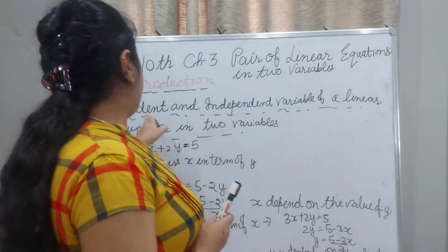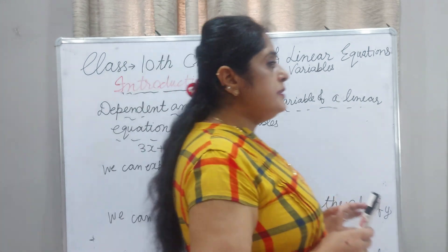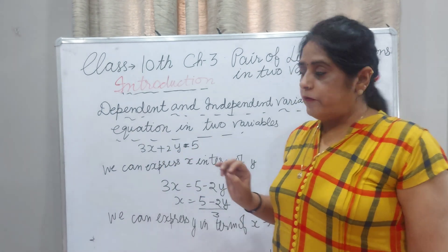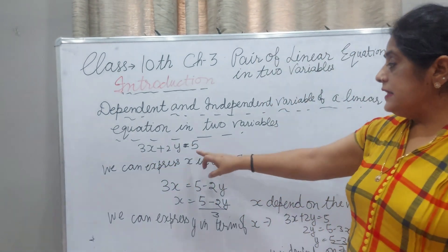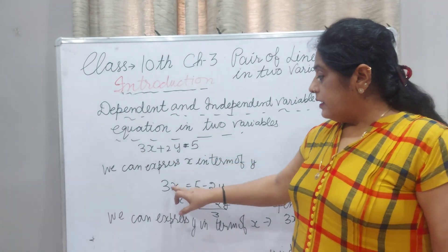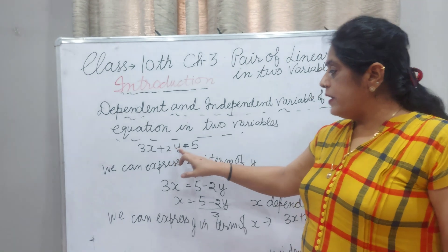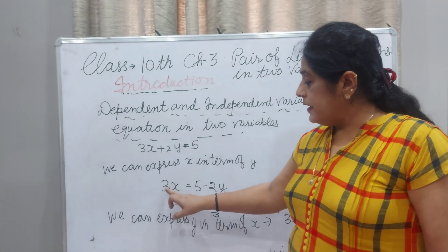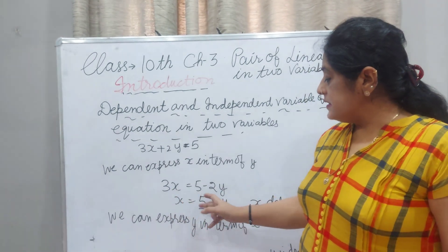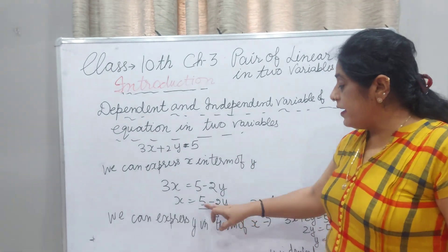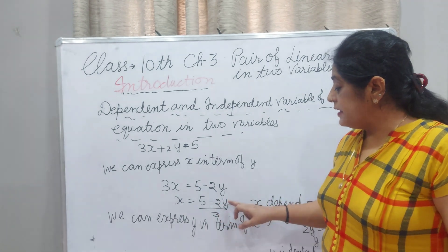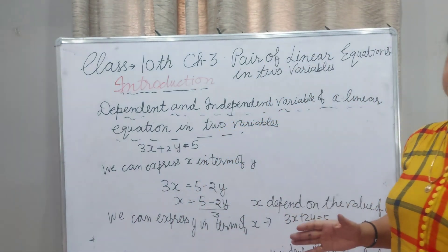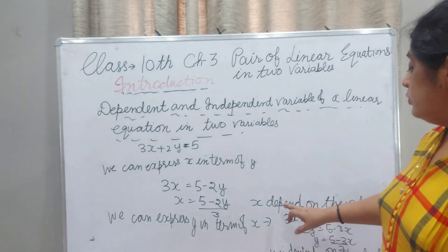Now, dependent and independent variables of linear equation in two variables. For example, 3X + 2Y = 5. We can express X in terms of Y. When 2Y comes to the right side it changes to minus sign, and 3 divides. So X = (5 − 2Y) / 3. We can assume any value of Y and then get the value of X. It means X depends on the value of Y, so X is dependent.